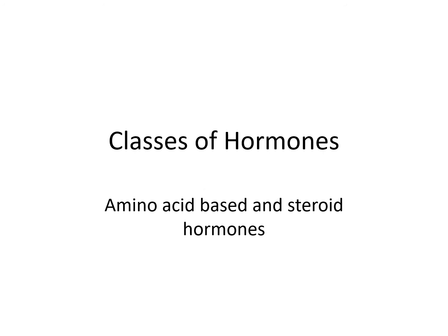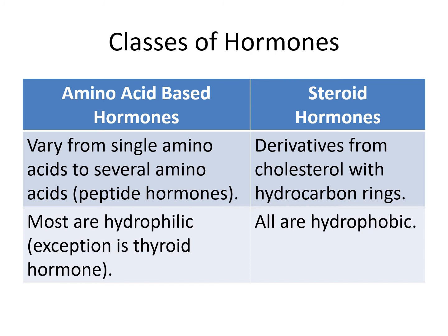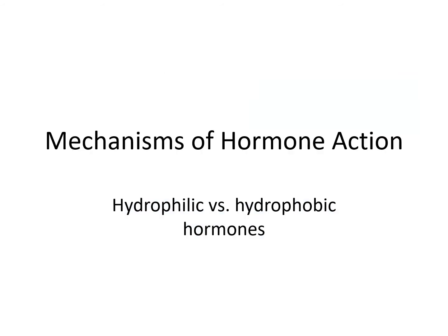Let's look at the different classes of hormones. Generally, they can be divided into amino acid-based hormones derived from amino acids, or steroid hormones derived from cholesterol. Amino acid-based hormones range from single amino acids to peptide hormones containing several amino acids, and most are hydrophilic. One exception is thyroid hormone — the only protein hormone that is not hydrophilic. Steroid hormones are derived from cholesterol, have large hydrocarbon rings, and are all hydrophobic.